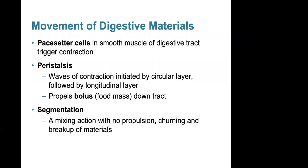Moving into digestive movements, we have pacesetter cells, very similar to pacemaker cells of the heart. These are located in the smooth muscle of the digestive tract and trigger contractions. Peristalsis consists of waves of contractions initiated by the circular layer followed by the longitudinal layer, propelling the bolus — the food mass — down the digestive tract after swallowing. There is also segmentation, which is a mixing action with no propulsion — churning and breaking up of materials.